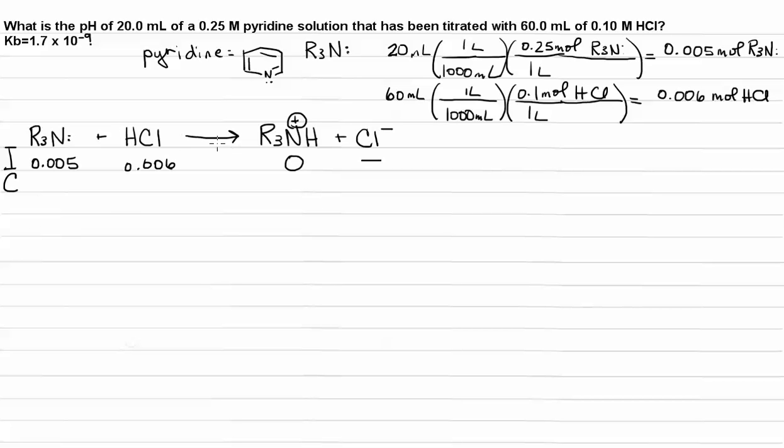Now, looking at the change for an IC final table for a reaction, you want to see which one of these is the limiting reagent and which one is in excess. R3N is the limiting reagent because we have less of it than we have of the HCl. So that means during the course of the reaction, all of pyridine is going to be used up. 0.005 moles of HCl is going to be used up. And we're going to gain 0.005 moles of the R3NH. After the reaction has come to completion, we have no base left over. We have 0.001 moles of HCl and 0.005 moles of R3NH.